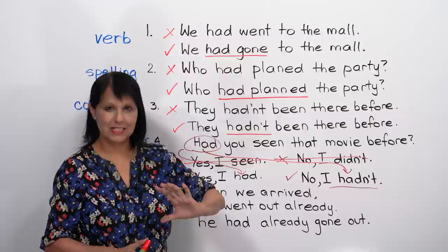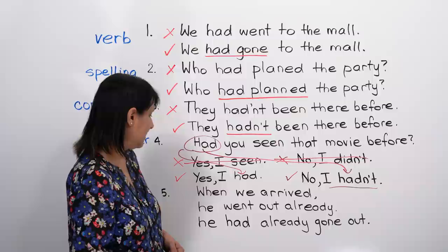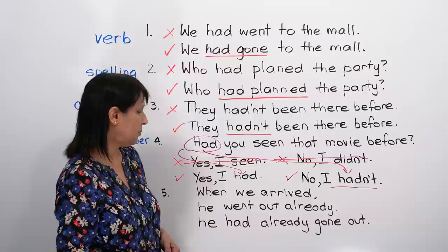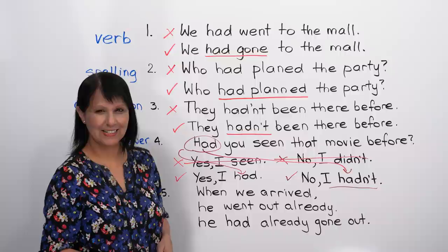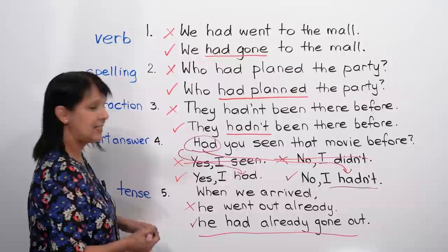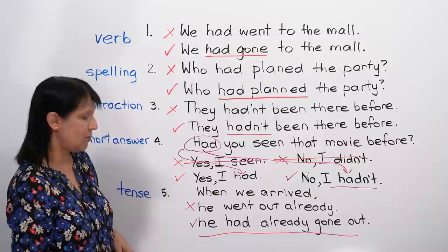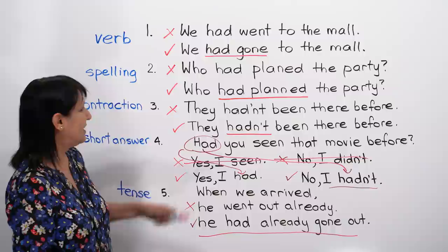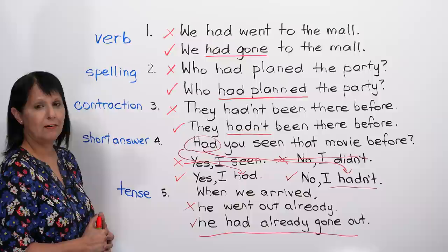The last mistake: when we arrived, he went out already — or when we arrived, he had already gone out. The correct one is he had already gone out. He went is wrong because he had already gone is the correct tense — and again, not went but gone, the third form.